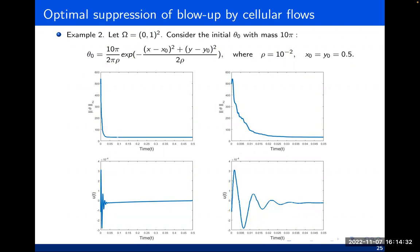The control U(t) oscillates — it has both positive and negative values. This means you sometimes need to change the orientation or direction of the flow to get the optimal result. It's not necessarily just blowing air in one direction; increasing the amplitude may not be the best idea. Sometimes you need to change orientation or strength. In the end, both theta and the control converge to zero. That's pretty much the main content I'd like to present today.